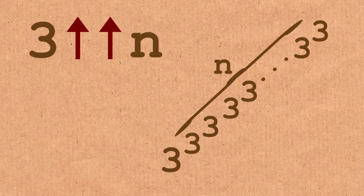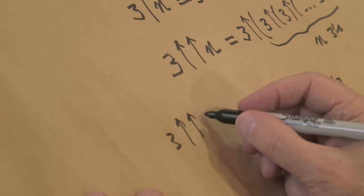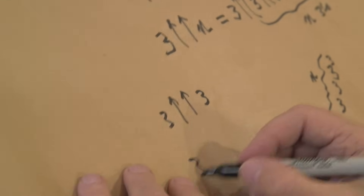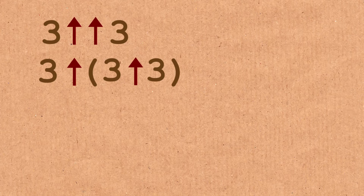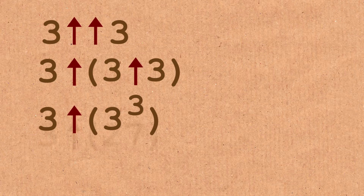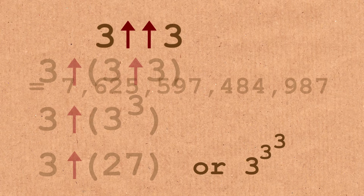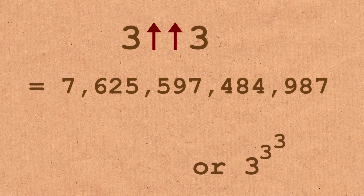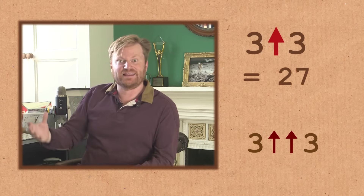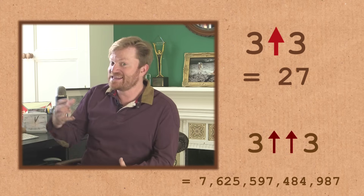For example, three double arrows three — how much is that? Well, that's three single arrow three single arrow three. Three to the three is 27, three to 27, which is three to the three to the three. Three to the 27th power is a pretty big number. It's worth stopping here for just a moment: two threes with one arrow between them is 27. Put two arrows between them and things escalate to over seven trillion. That's a pretty quick escalation.